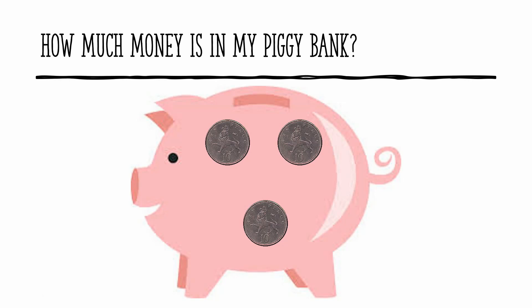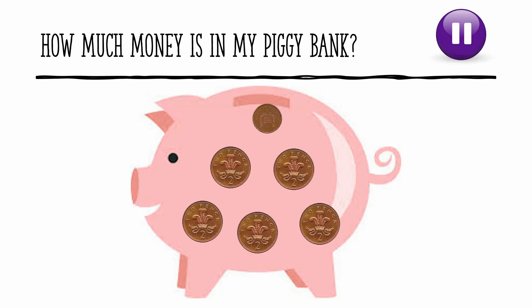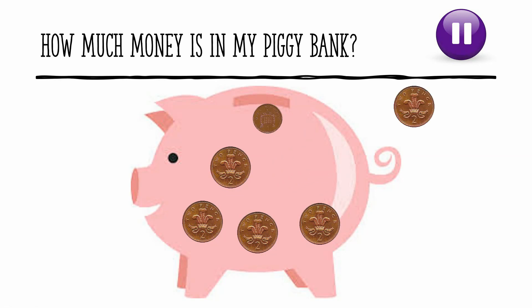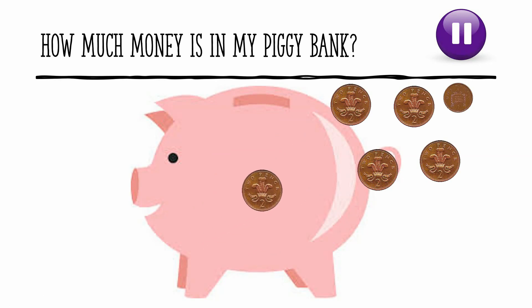How much is in this piggy bank? You may want to pause the video and have a go at doing this all by yourself. I'm going to count in twos first because there are lots of two pence coins. Two, four, six, eight, ten — there's ten pence there. Then I need to add one: ten, add one, eleven. I've got eleven pence in my piggy bank.